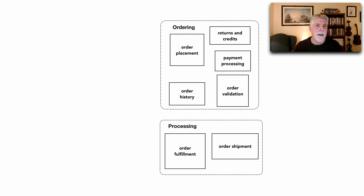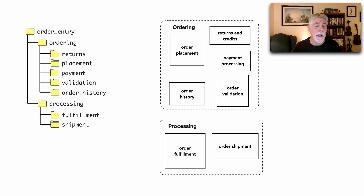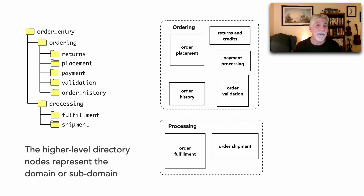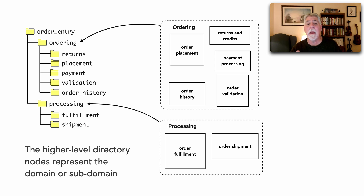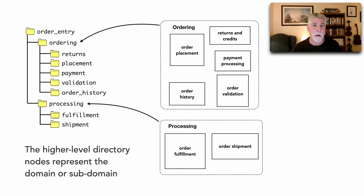What does this look like in a system? In most programming languages, it can be realized through the namespace or directory structure of that system. The way this source code is organized reflects the logical architecture — the structure of that system or service. The higher-level directory nodes designate the domain or subdomain in which those components are grouped. For example, ordering maps to an ordering directory and processing components map to a directory node called processing.